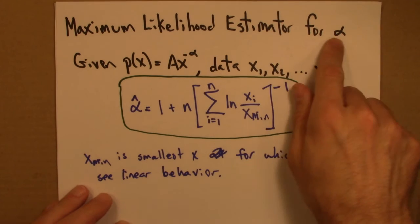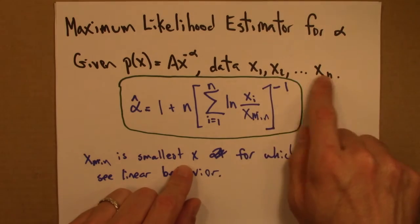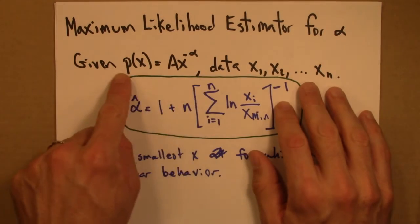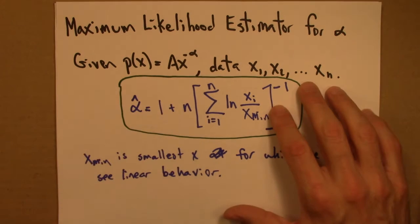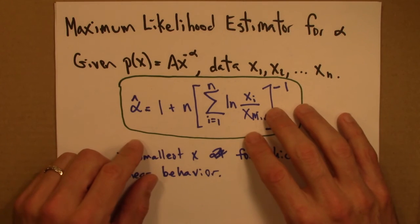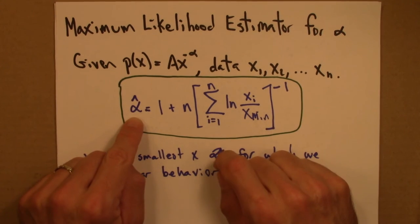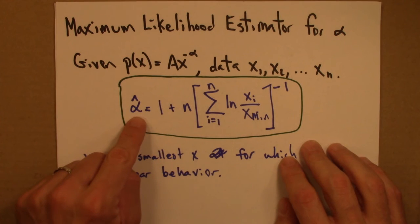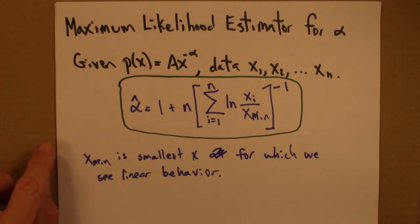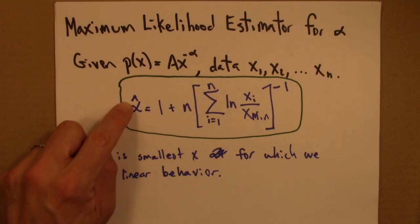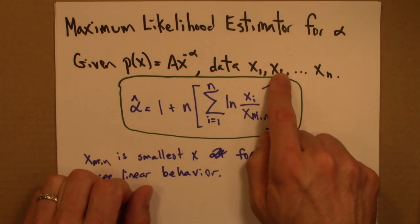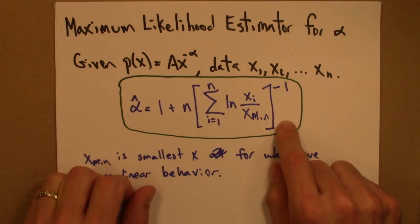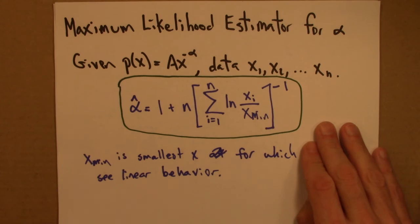So here is the maximum likelihood estimator for alpha for a power law. Given a data set x1, x2 up to xN, and assuming the data is described by a power law with parameter alpha — where A can be written in terms of alpha — if one carries out the process to maximize the likelihood, one arrives at this estimator alpha-hat. Plugging your data into this formula will give you an alpha that makes the data the most likely, and so this is the best estimator. In statistical inference it's typical to put a hat on a quantity that's an estimator, indicating it's our best guess at the true value of alpha.